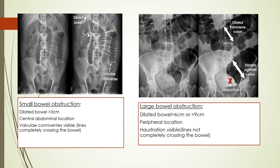We can clearly see the difference between a small and a large bowel obstruction on the basis of abdominal x-ray. In small bowel obstruction, the loop is dilated more than 3 cm but not more than 6 or 9 cm as it is in the case of large bowel obstruction. The location is generally central, and we see valvulae conniventes — lines that extend from wall to wall and completely cross the bowel, as we can see over here.